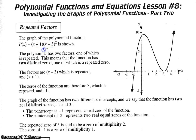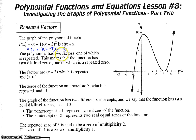So this x minus 3 squared, we could write that as x minus 3 times x minus 3, because when you square something, you're multiplying it by itself. The x minus 3 factor is repeated. This means the function has two distinct zeros, one of which is a repeated zero. Setting each factor equal to zero: x plus 1 equals zero gives x equals negative 1, and x minus 3 equals zero gives x equals 3 — twice, since that factor is repeated.